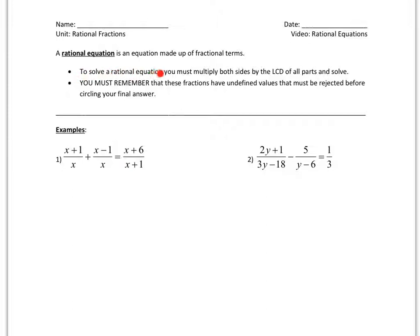So to solve these, we need to multiply both sides, or in other words, you multiply all the pieces by the LCD. So watch, if we multiply this, first we have to analyze what the LCD is. So in this first problem, the least common denominator is x times x plus 1.